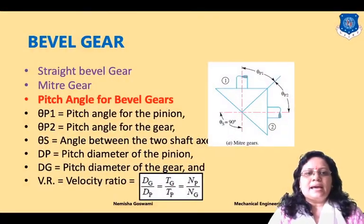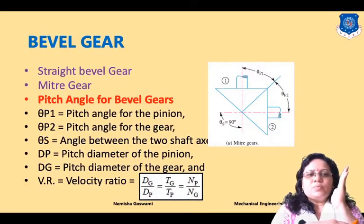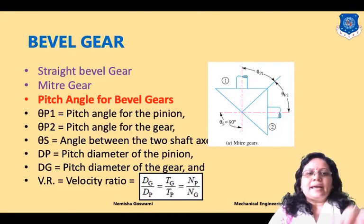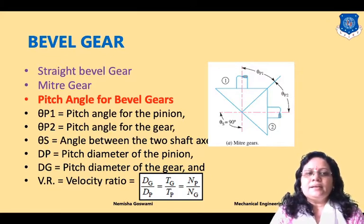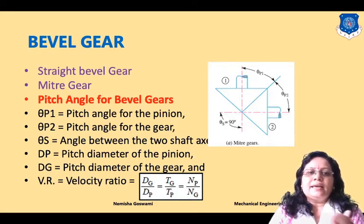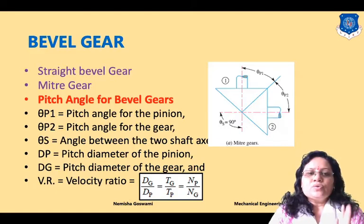Next is miter gear. As you can see in this diagram, when the shaft axes of two gears are at a right angle with each other, this is a special case known as miter gears. Here θp1 and θp2 indicate the pitch angle for the pinion and pitch angle for the gear, and θs is the shaft angle between two shaft axes.